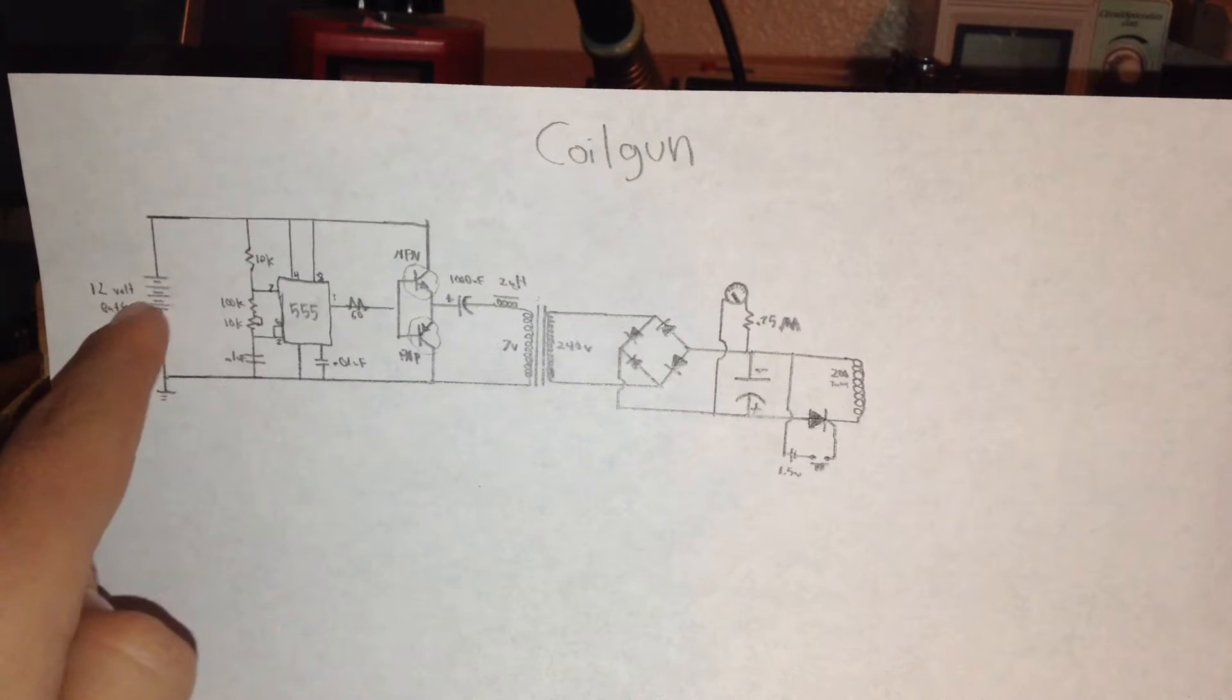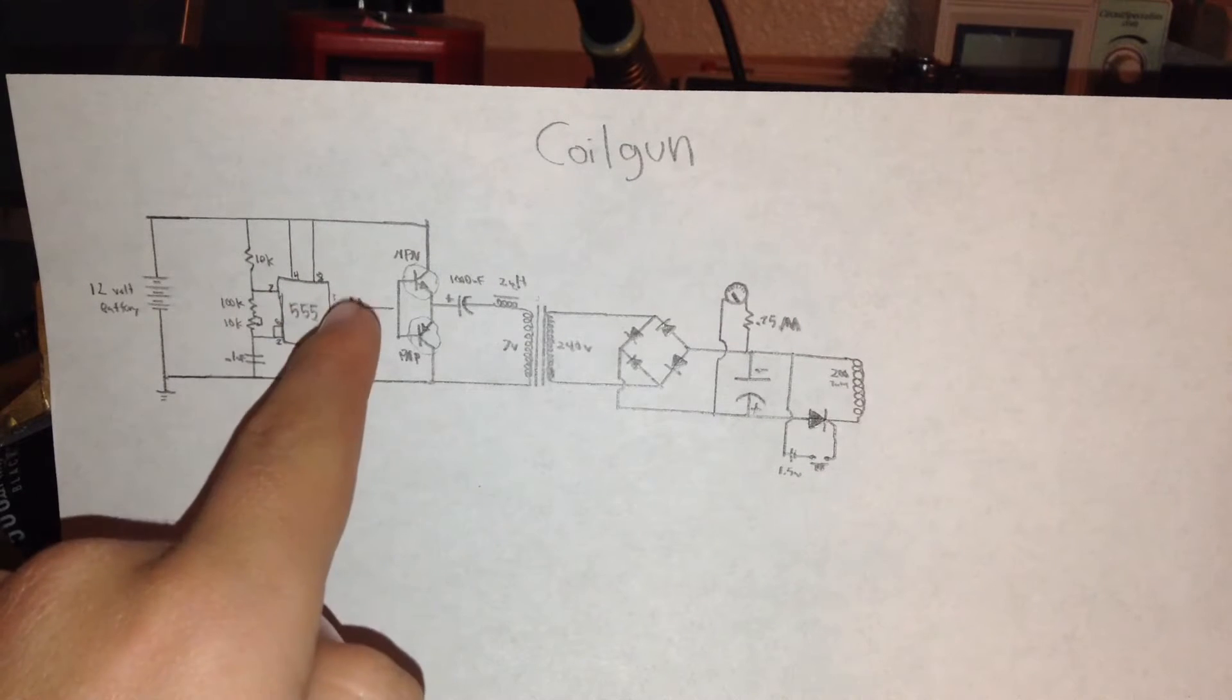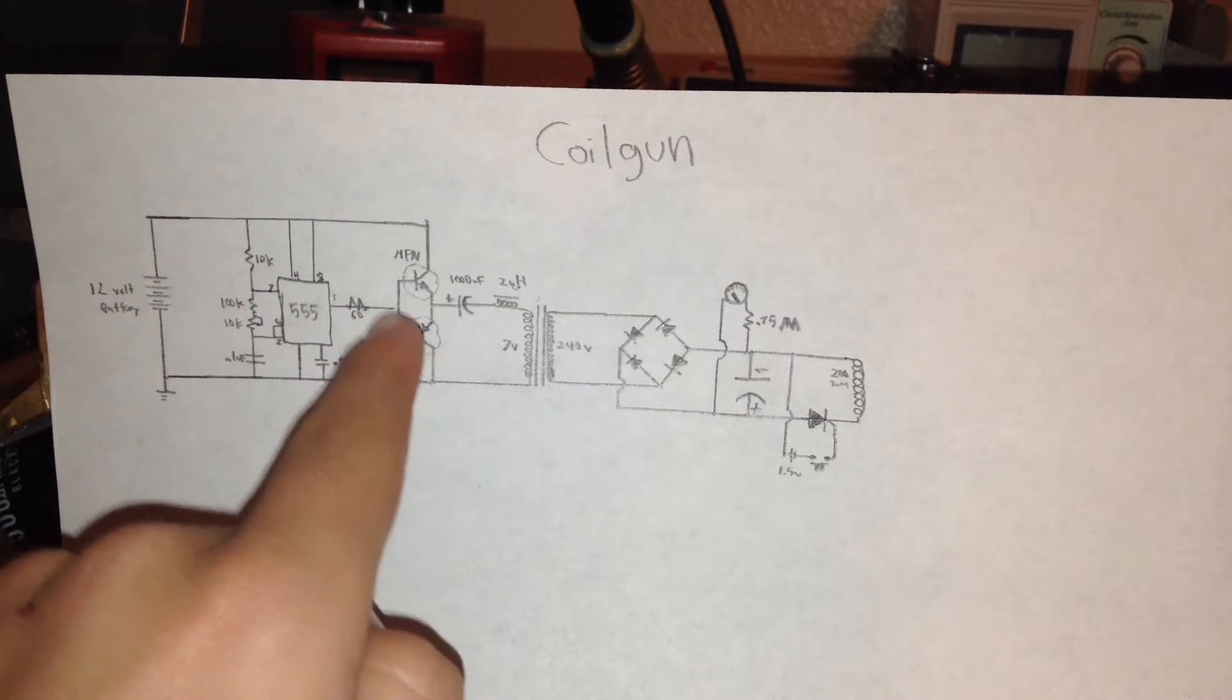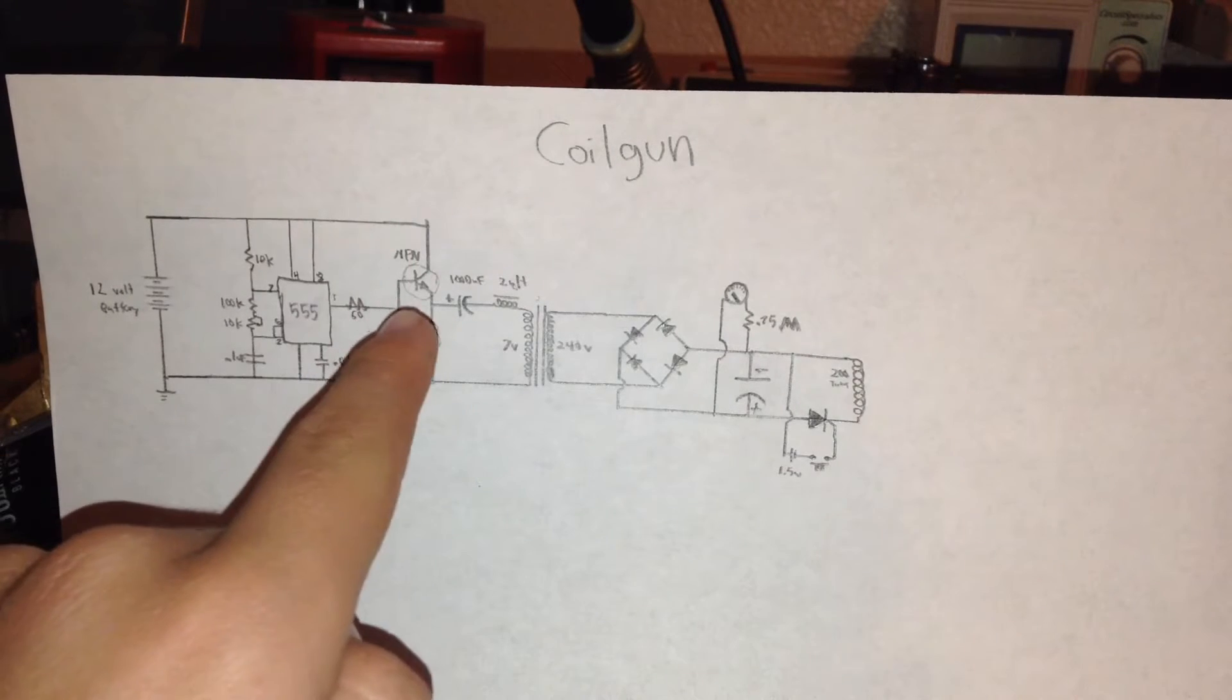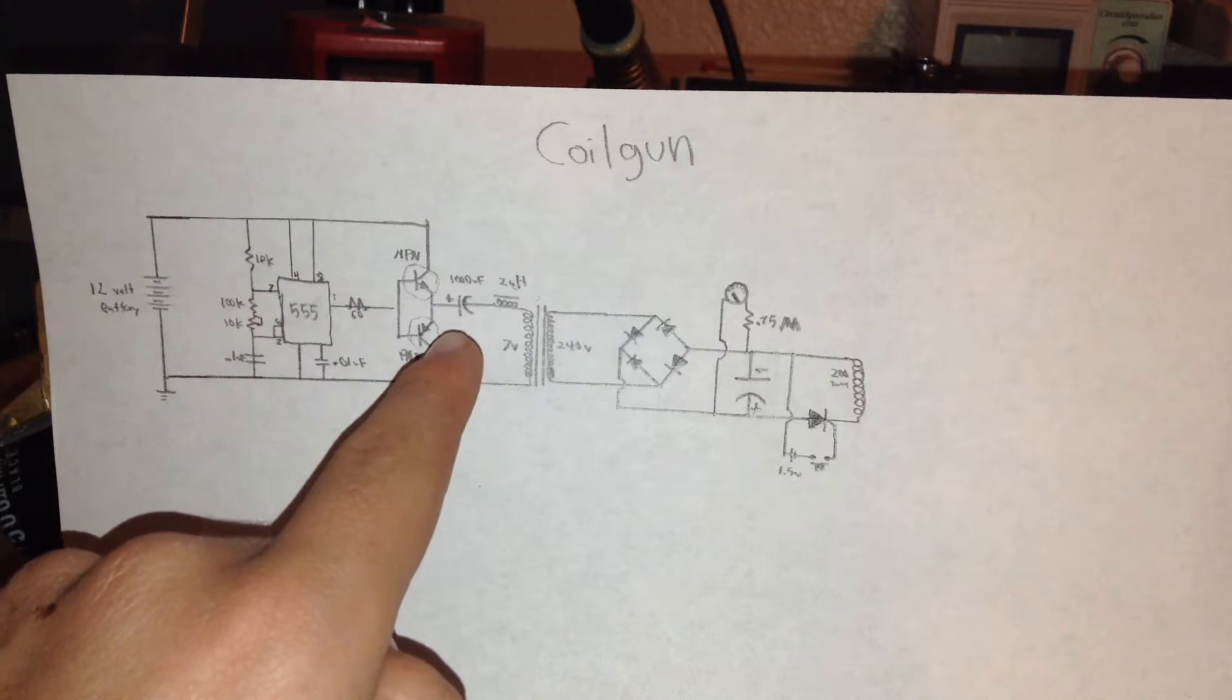My coil gun is powered by a 12 volt battery. This battery powers a 555 timer oscillator which puts out a 60 hertz square wave. This 60 hertz square wave turns these two transistors on and off to create a 60 hertz sine wave.